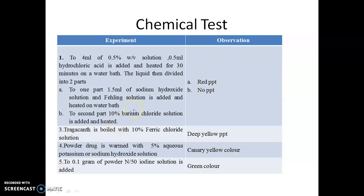To the second part of the hydrolysate, if lead acetate solution is added, no precipitate is observed. In agar, a white precipitate is observed due to the presence of sulfur, but in Tragacanth no precipitate is observed. Another test: when Tragacanth is boiled with 10% ferric chloride solution, a deep yellow precipitate is observed. This is an important identification test that distinguishes Tragacanth from other gums like Acacia and agar.